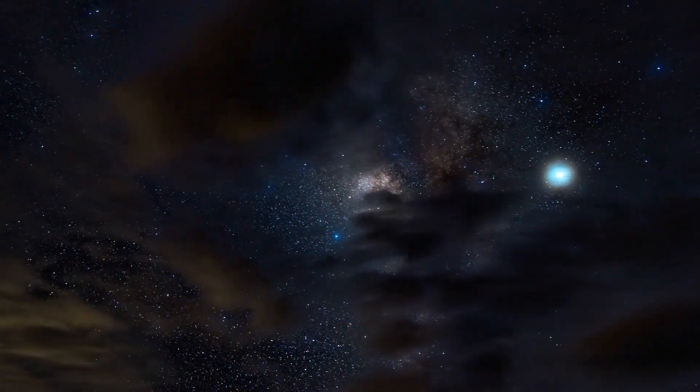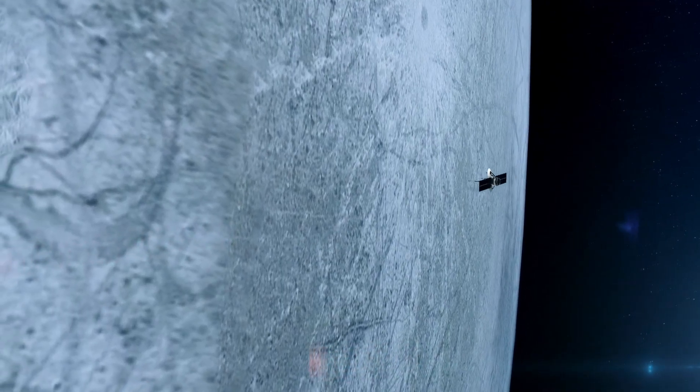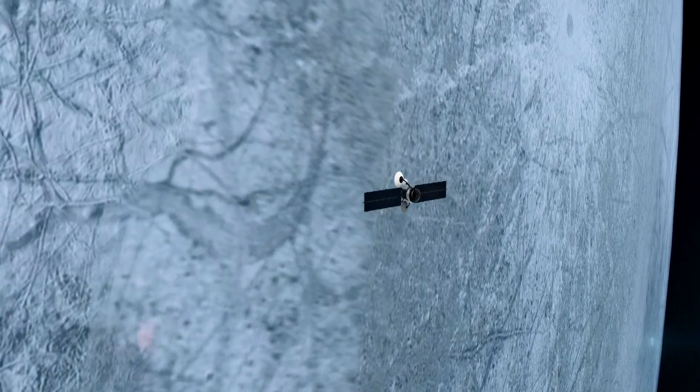The spacecraft also turned its gaze toward Triton, Neptune's largest moon, revealing an alien landscape of nitrogen ice